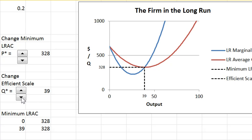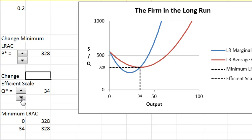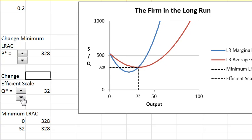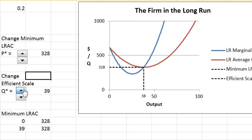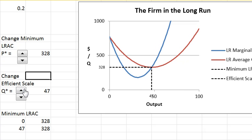And just to show you, you have these controls here. You can change the efficient scale. So a different technology at the same input prices might produce a lower efficient scale. This means it's not as much increasing returns. And likewise, the control allows you to increase the efficient scale.